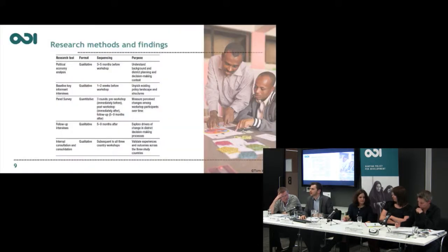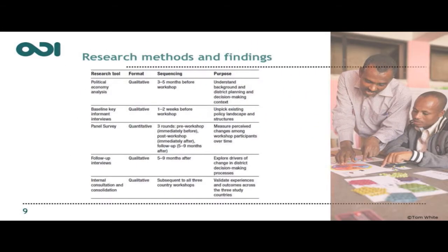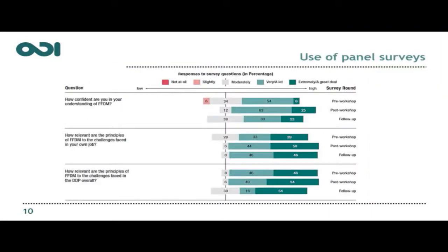In terms of the research that we did, it was very much a mixed methods approach. We had a political economy analysis in each of the districts before we went in, to identify who the key actors are and how change actually happens at the district level. We did key informant interviews within the districts before we came in. Then we had a panel survey asking the same questions to the same people before the workshops, just afterwards, and then coming back after five to nine months as well.